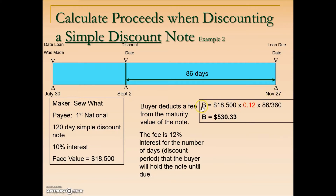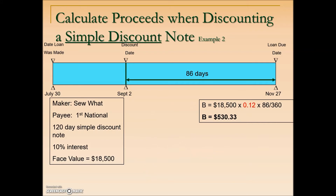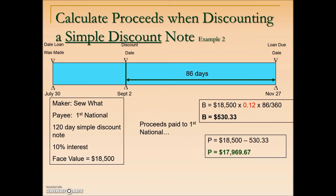The 86 days is the time we use when calculating the bank discount. The maturity value — which equals the face value for a discount note — is multiplied by the buyer's discount rate of 12%, which has nothing to do with the original loan's interest rate, times the remaining time of 86 days over 360. This results in a bank discount of $530.33, meaning First National Bank will receive proceeds of approximately $17,969.67 — just shy of $18,000.